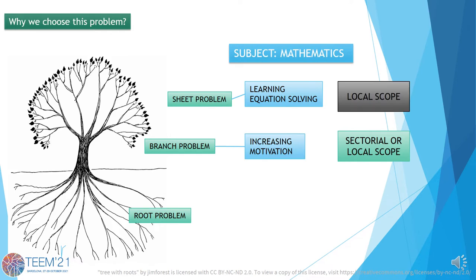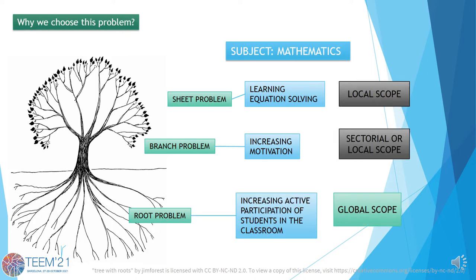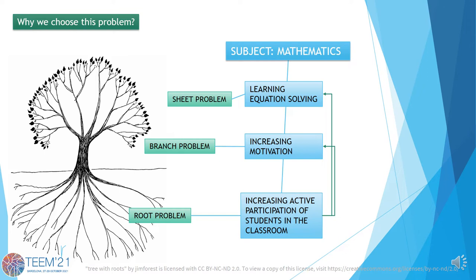A branch problem, such as the lack of motivation, can have a local or even sectorial scope if this lack is produced by internal effects such as teacher behavior. But a root problem, such as the passivity of students, has a global scope, and solving this problem could help address other problems, increasing motivation and improving the learning of specific topics.